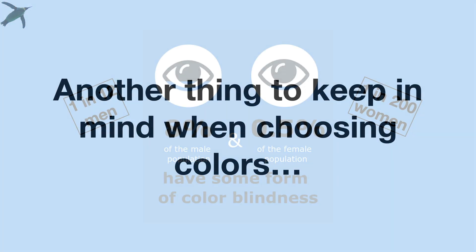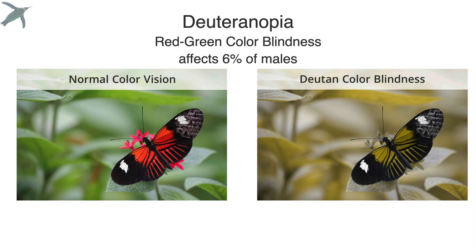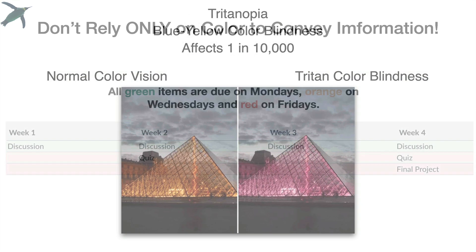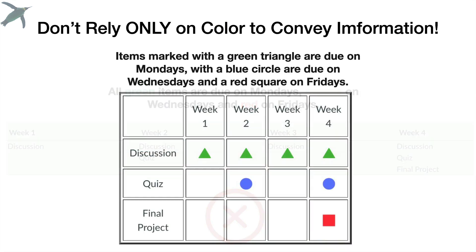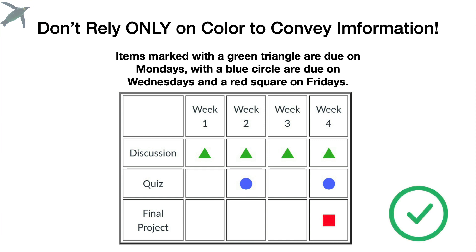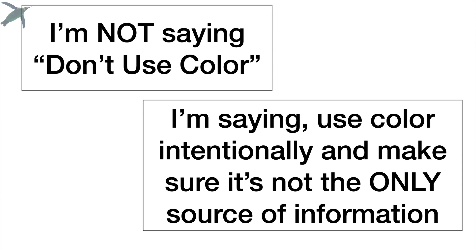Another thing to keep in mind when choosing color is that 1 in 12 men and 1 in 200 women have some form of color blindness. There are lots of different types of color blindness, so it is important when making content not to rely on color alone to convey information. This wouldn't work for a person with red-green color blindness. If you're going to use color, also use symbols so a colorblind person also gets all the information they need. I'm not saying don't use color — use color intentionally and make sure it's not the only source of information.